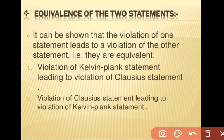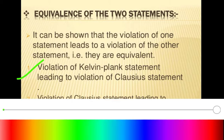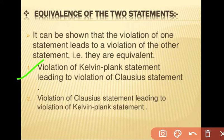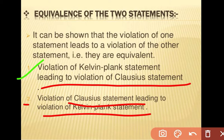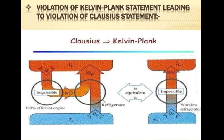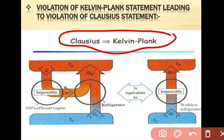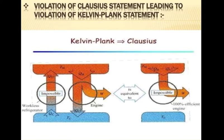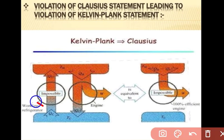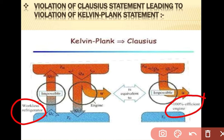The violation of the Kelvin-Planck statement leads to the violation of the Clausius statement, and the violation of the Clausius statement leads to the violation of the Kelvin-Planck statement. These are the same relations, showing the equivalence of the Clausius and Kelvin-Planck statements. A hundred percent efficiency engine is impossible; similarly, heat transfer without external work is impossible.